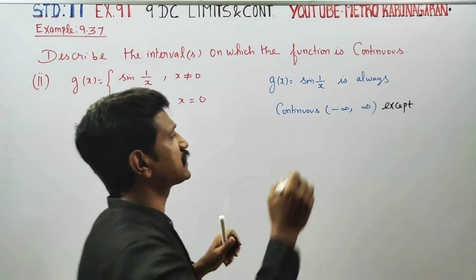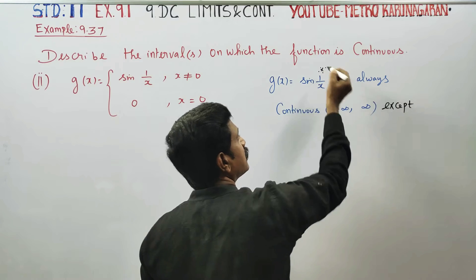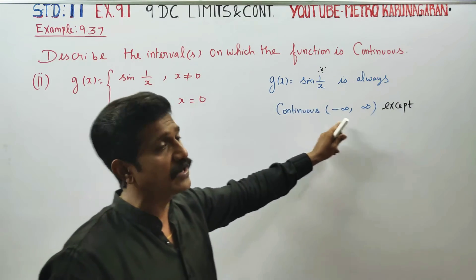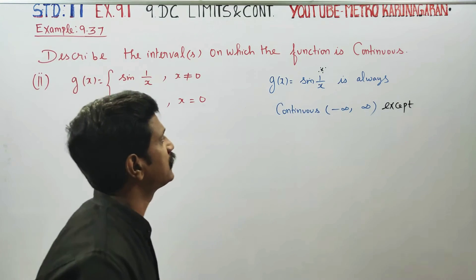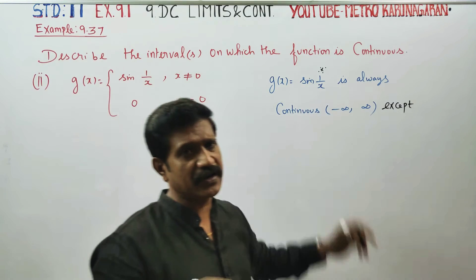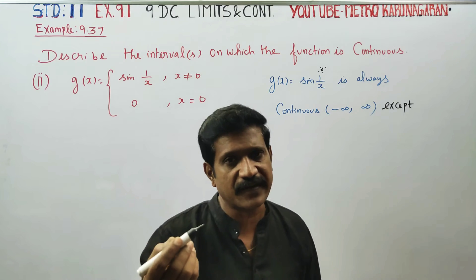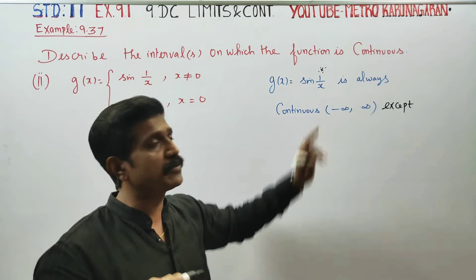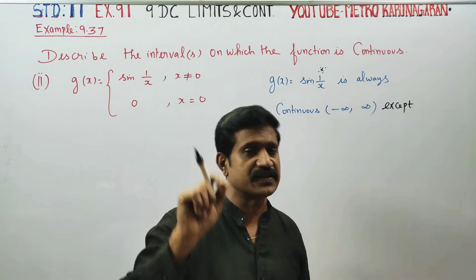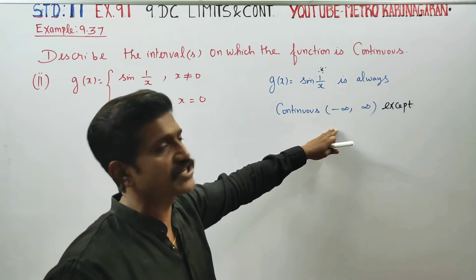It is continuous from minus infinity to plus infinity. However, here comes the doubt: 1/x — 1 divided by 0 is undefined. In general, the 1/x curve is discontinuous at x equals 0. That's why I will check this out.